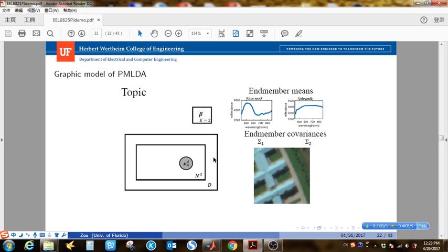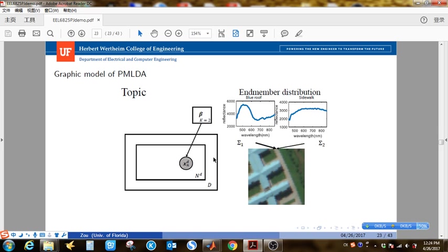Then PM-LDA assumes that the topic is an exponential family distribution such as Gaussian or beta distribution. So the end-member means we would like to estimate is the topic mean.